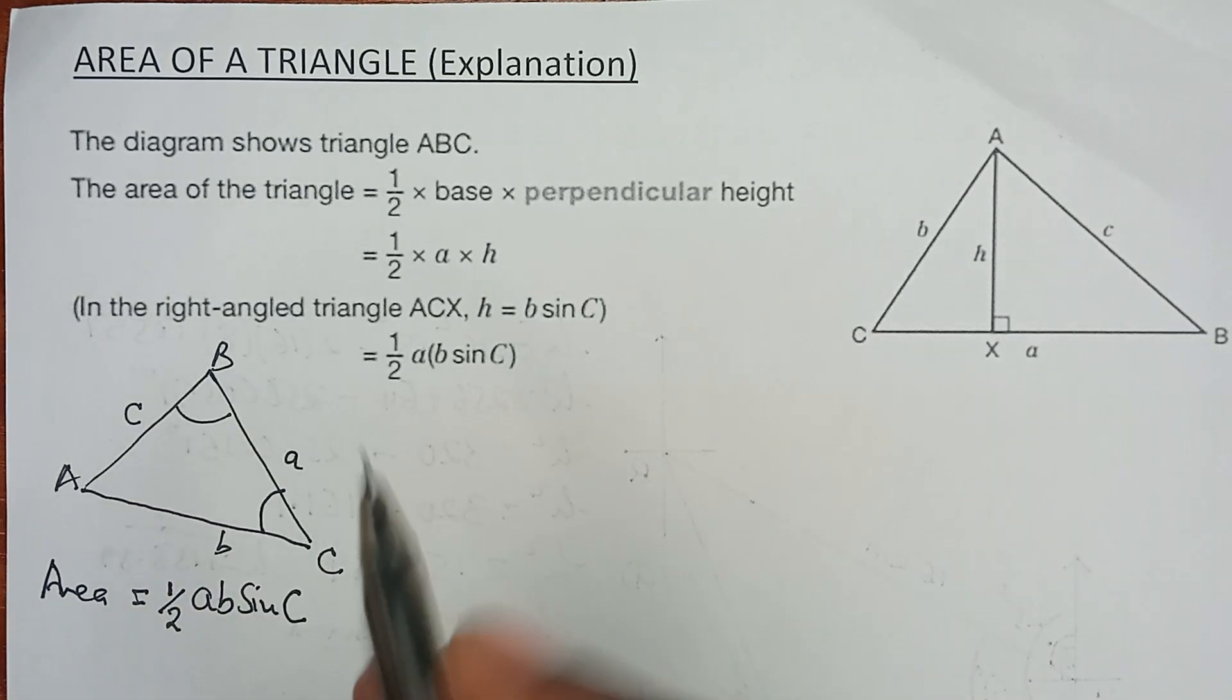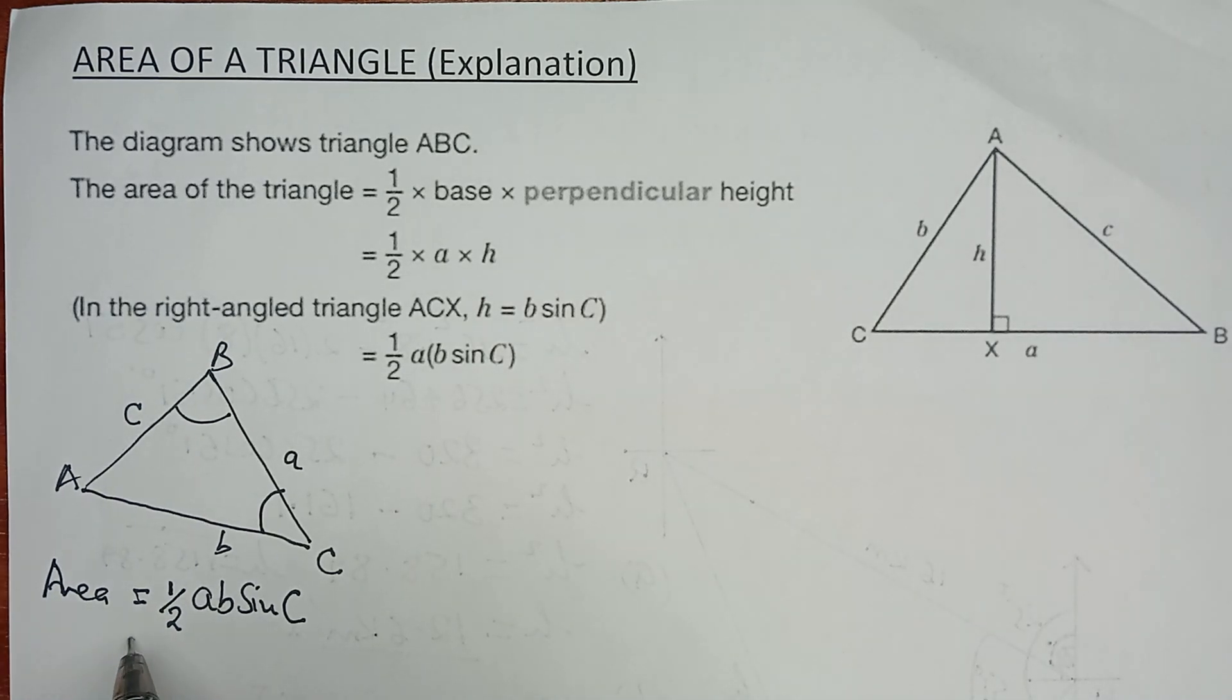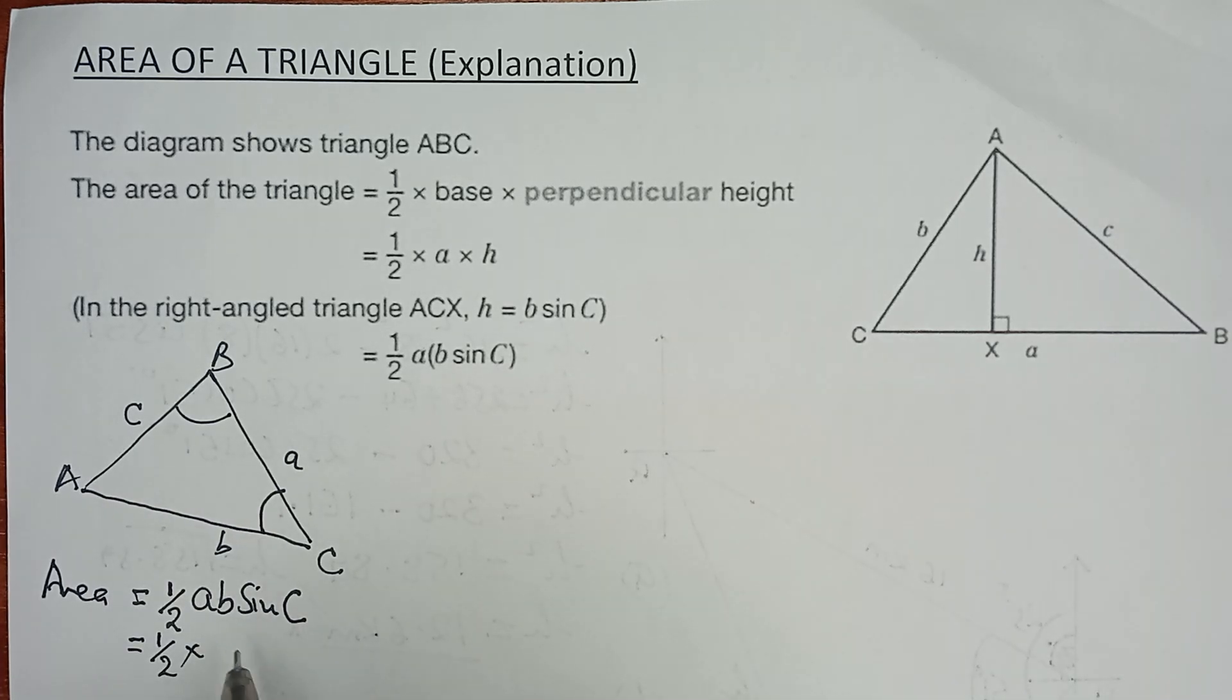If you want to use probably this angle, we will say that area is a half times A, C, A, C, the sine of B. And that is just it.